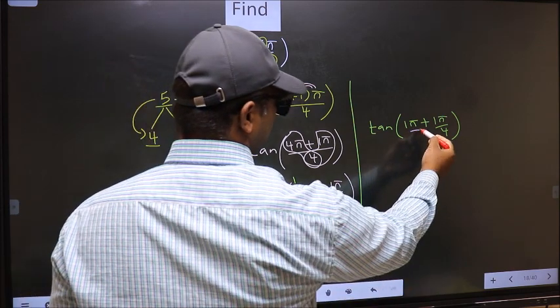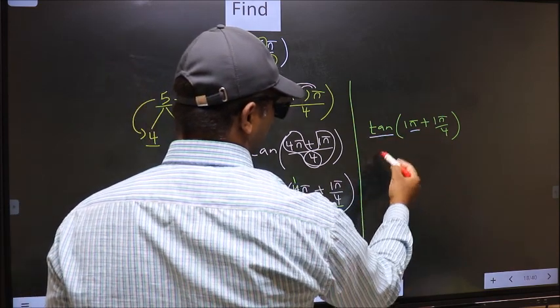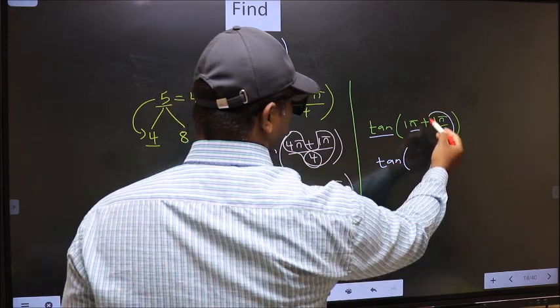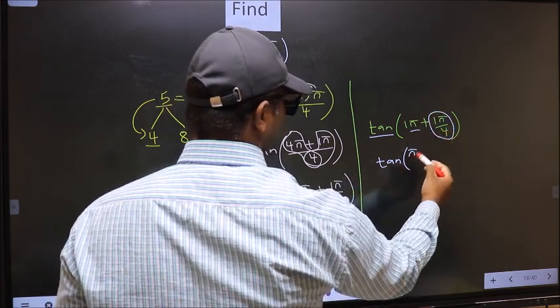Here we have π. So tan is not going to change; it will remain tan. And inside, we get this angle: π/4.